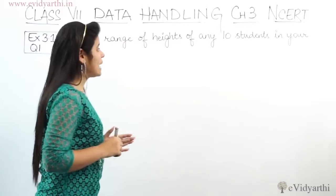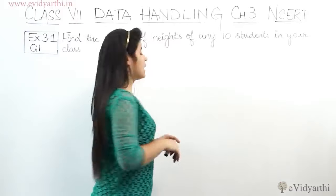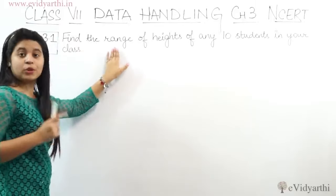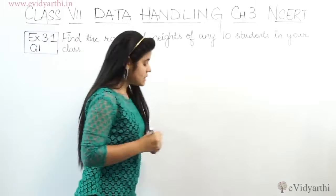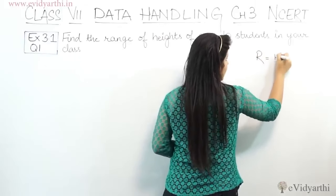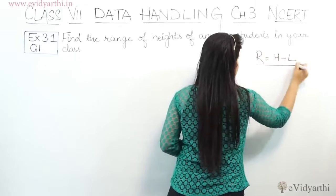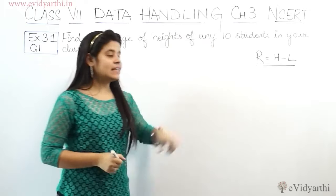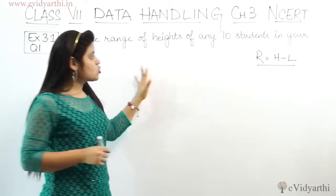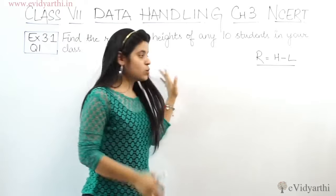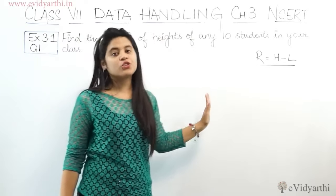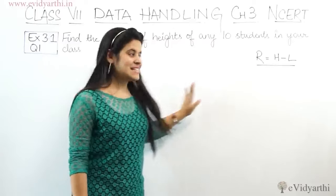Find the range of heights of any 10 students in your class. So what do you need to find? Find the range. What is the range? Range is basically highest minus lowest — the difference between the highest and the lowest observation. If you have any data, the highest value and the lowest value, the difference between them is what we call the range.